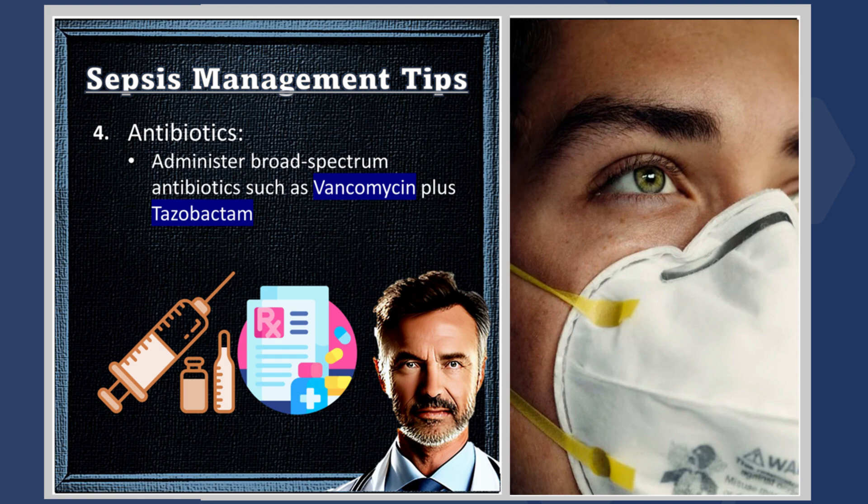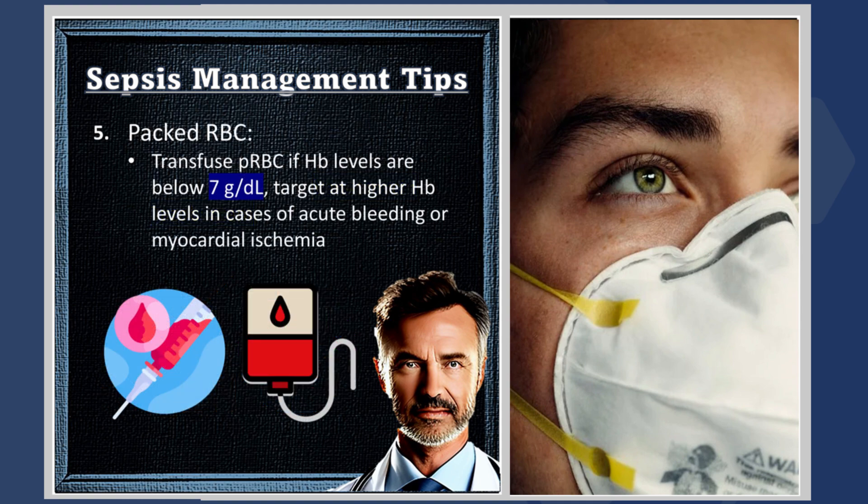Four: antibiotics — administer broad-spectrum antibiotics such as vancomycin plus tazobactam. Five: packed RBCs — transfuse packed RBCs if hemoglobin levels are below 7 grams per deciliter. Target higher hemoglobin levels in cases of acute bleeding or myocardial ischemia.